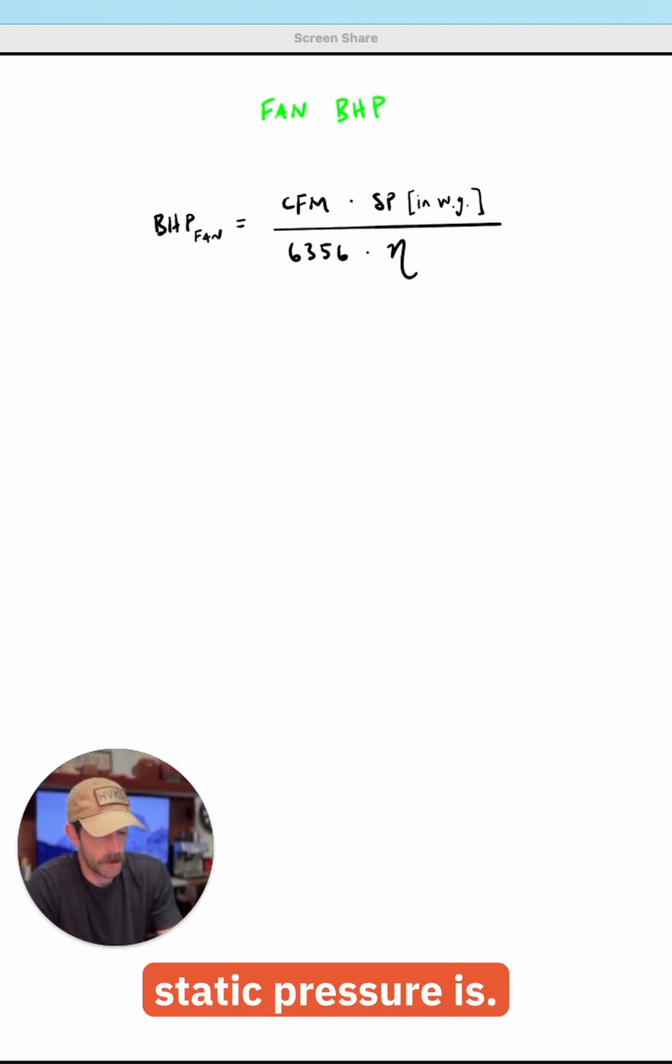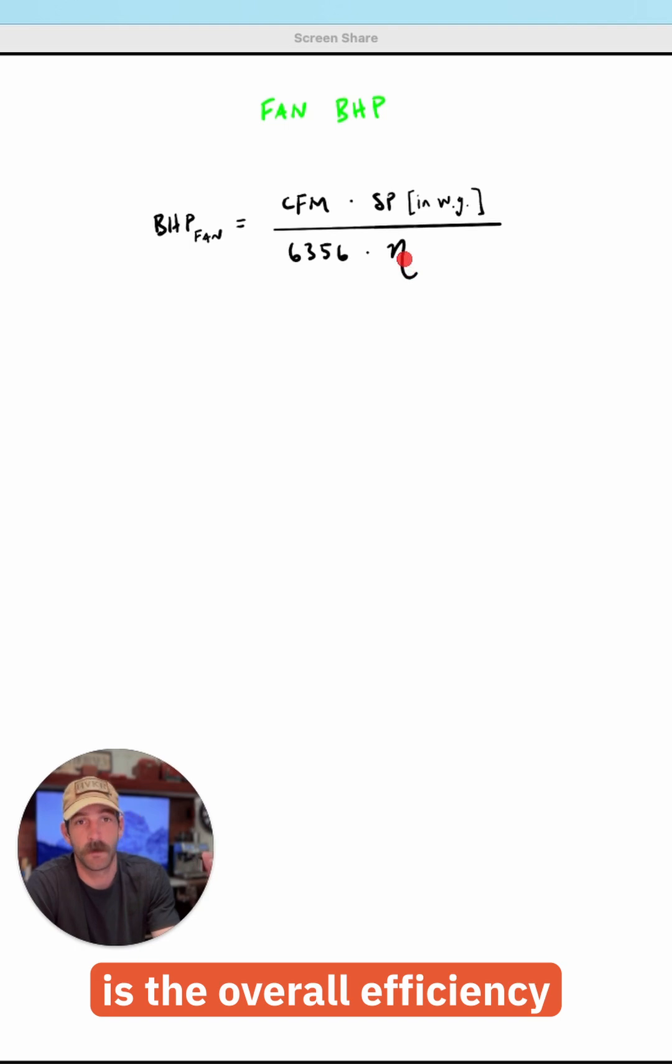We know what CFM is. We know what static pressure is. 6356, this is just a conversion factor that's going to take CFM in inches and convert that to horsepower. So that's a constant we can use. And then this is the overall efficiency of the fan.